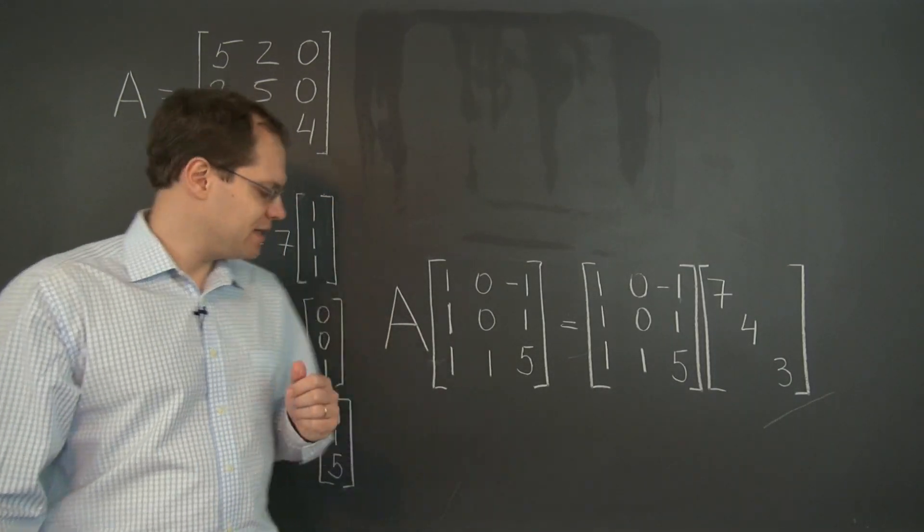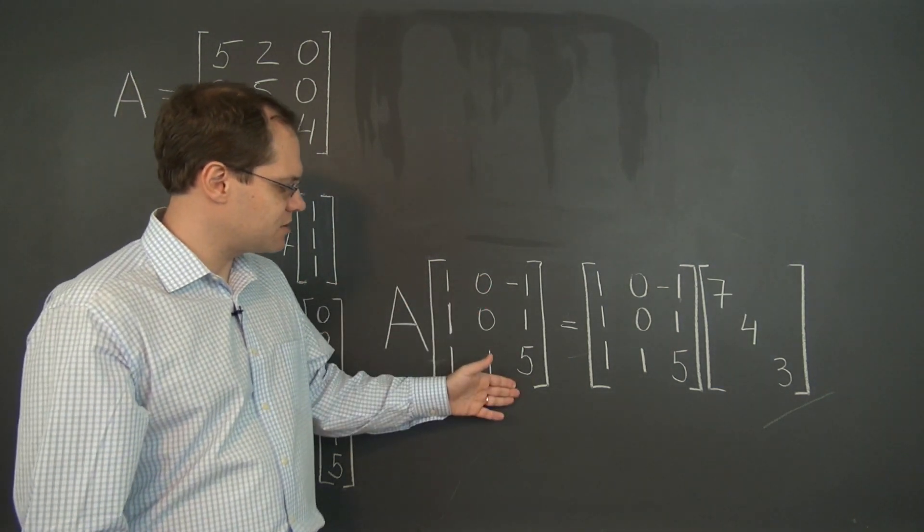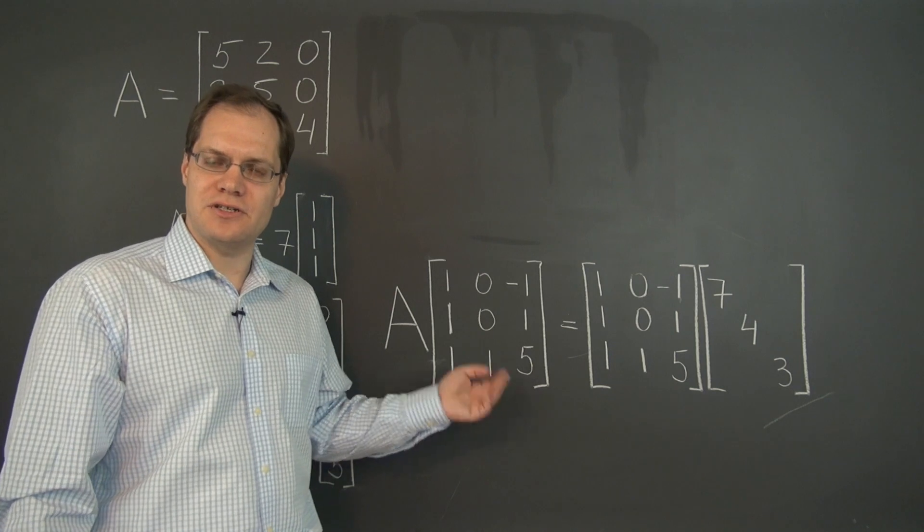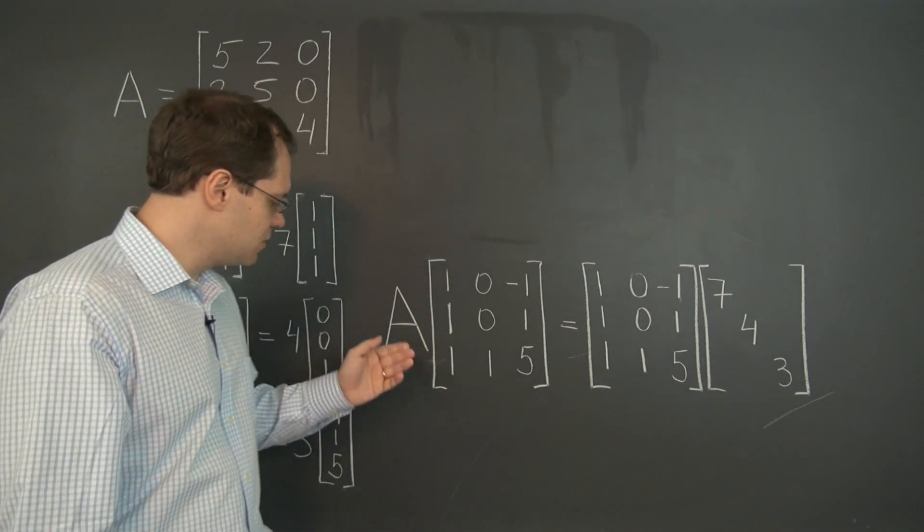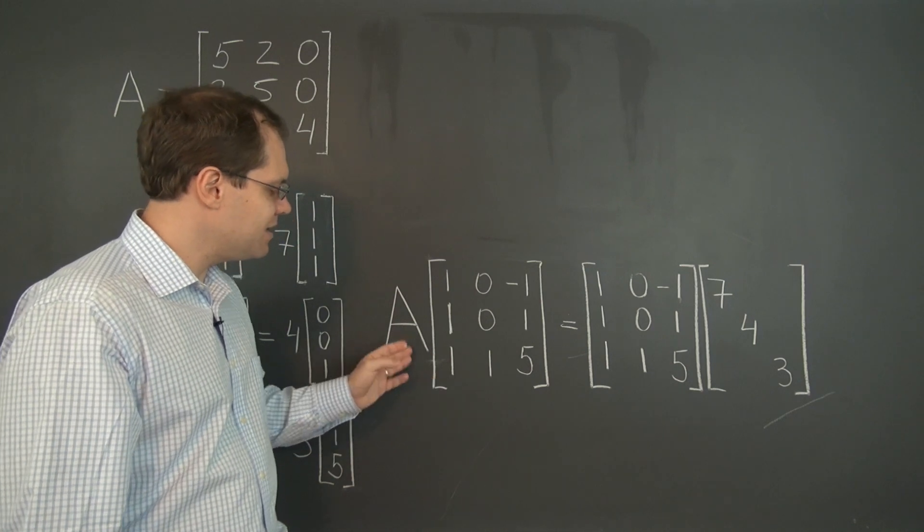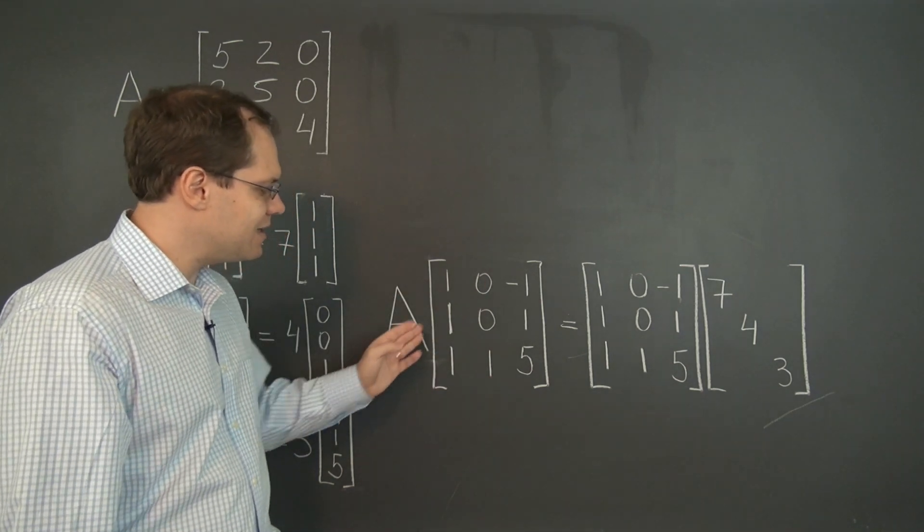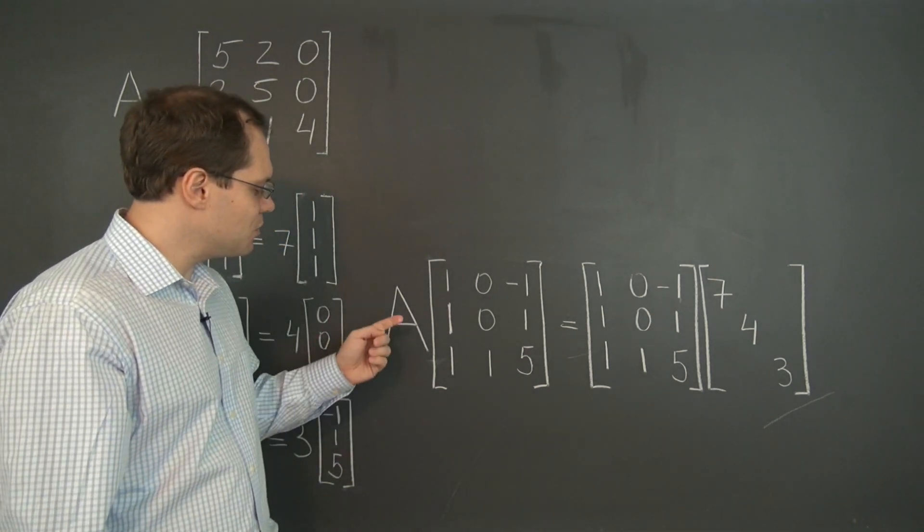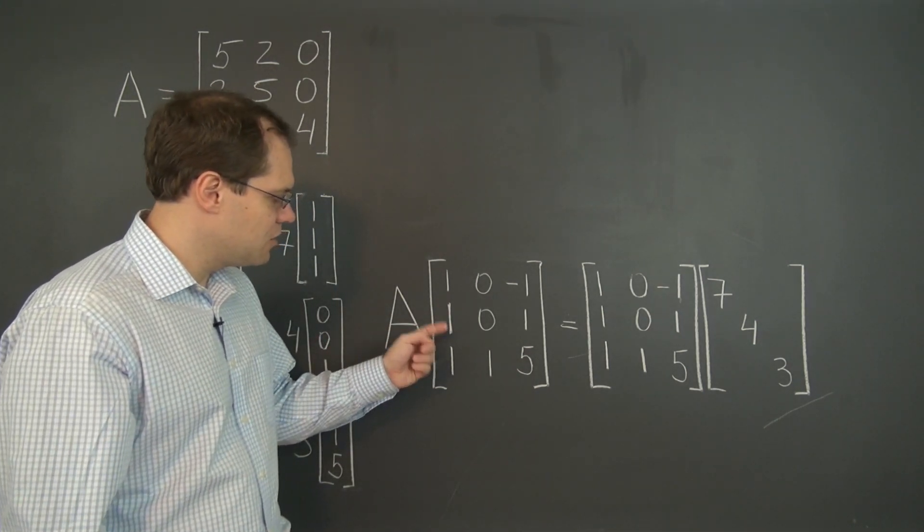Alright, so here we have it. What I did was organize the eigenvectors into a matrix. So what we have here, if I were to interpret this matrix from the column's point of view, is A times the first column, and then A times the second column, and then A times the third column, reassembled into a matrix. And what do we get when we multiply A by the first column? Well, we get seven times the first column.